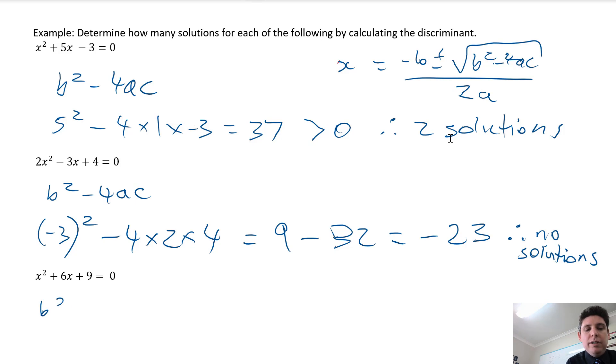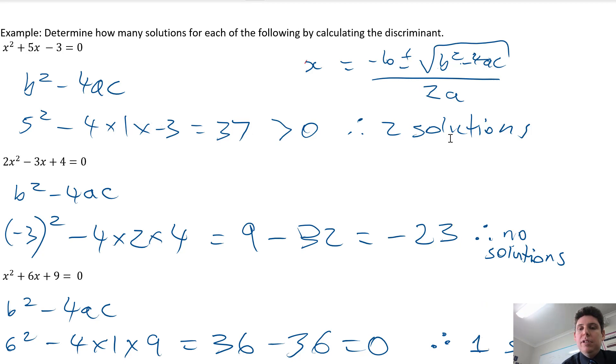The last one, what's the b number? 6. What's the a number? What's the c number? So we got 36 minus 36, which is zero. This means there's one solution. So the bit inside the square root is zero. So you're just left with negative b over 2a.